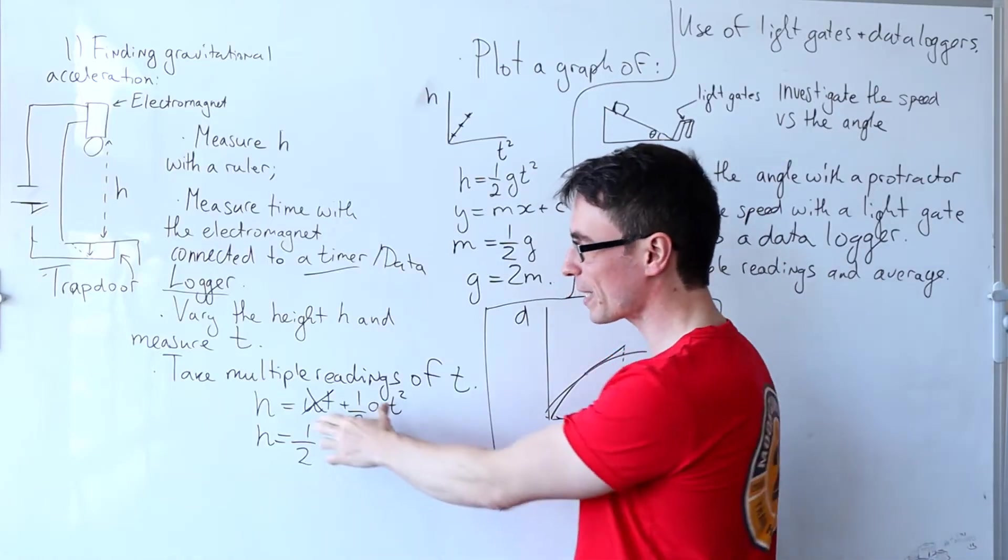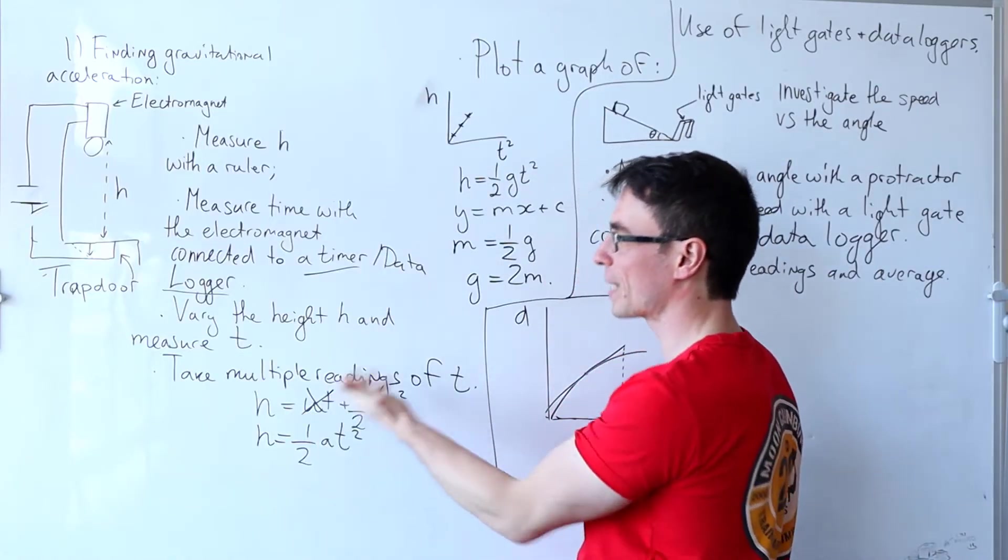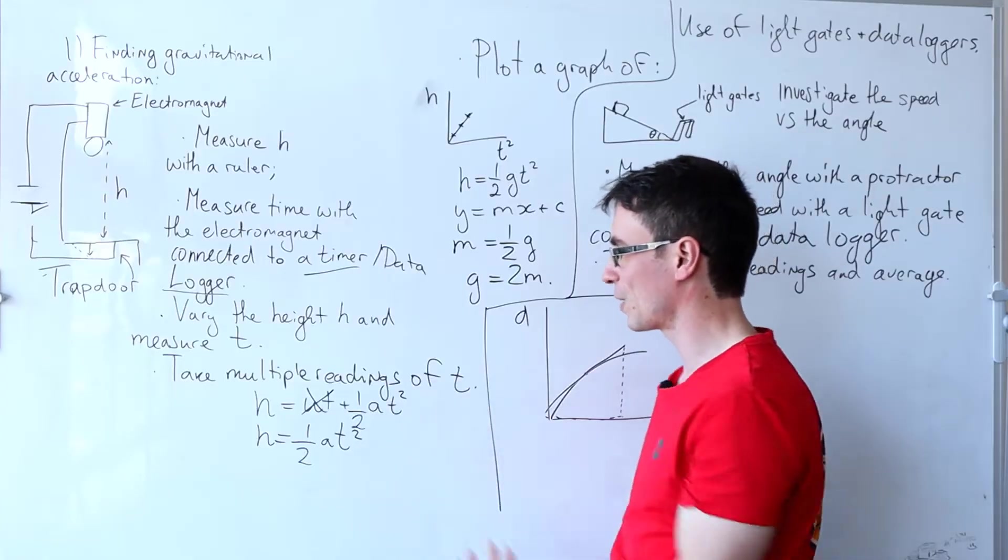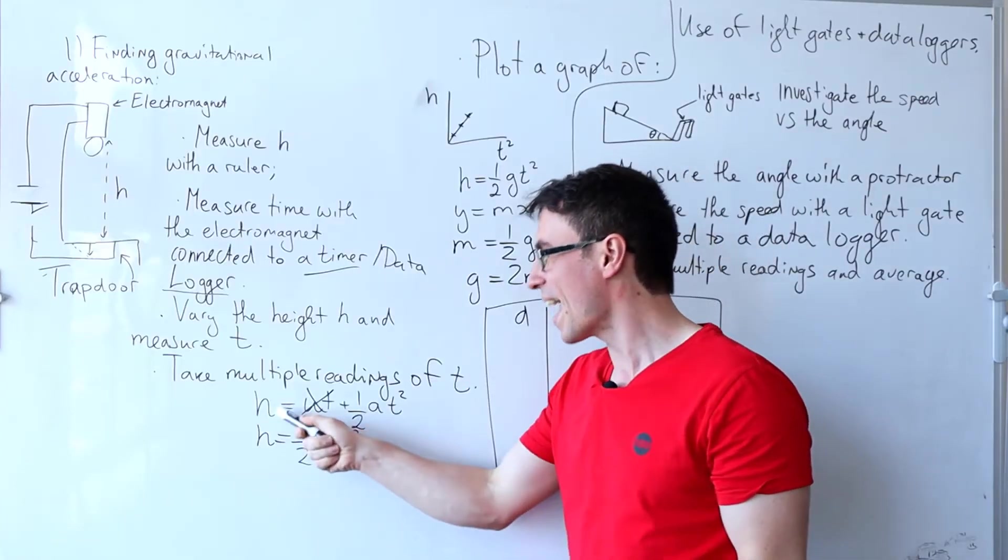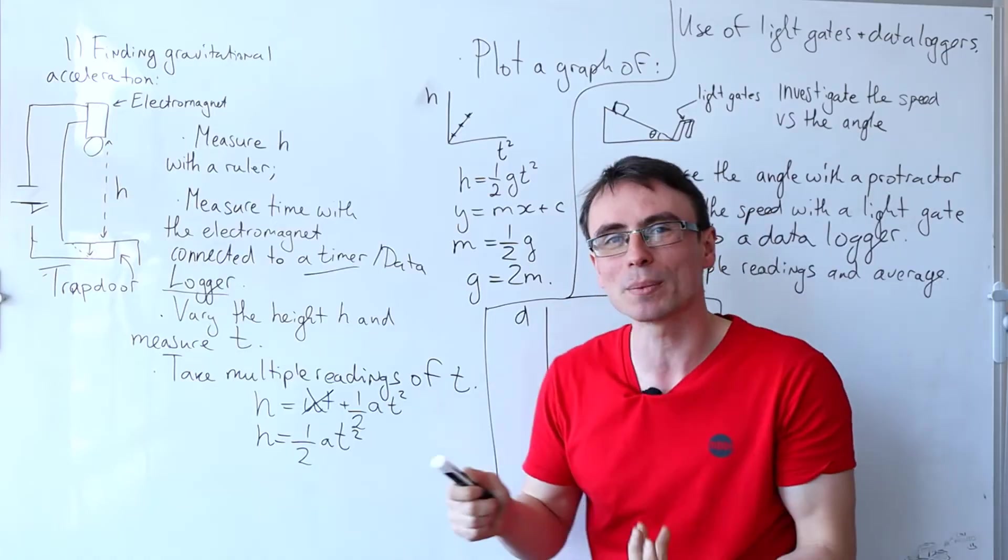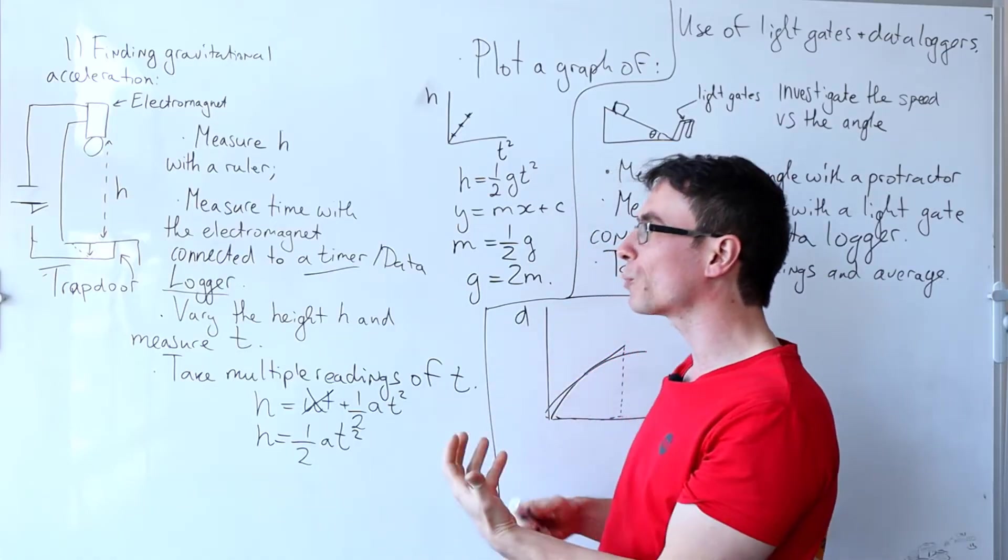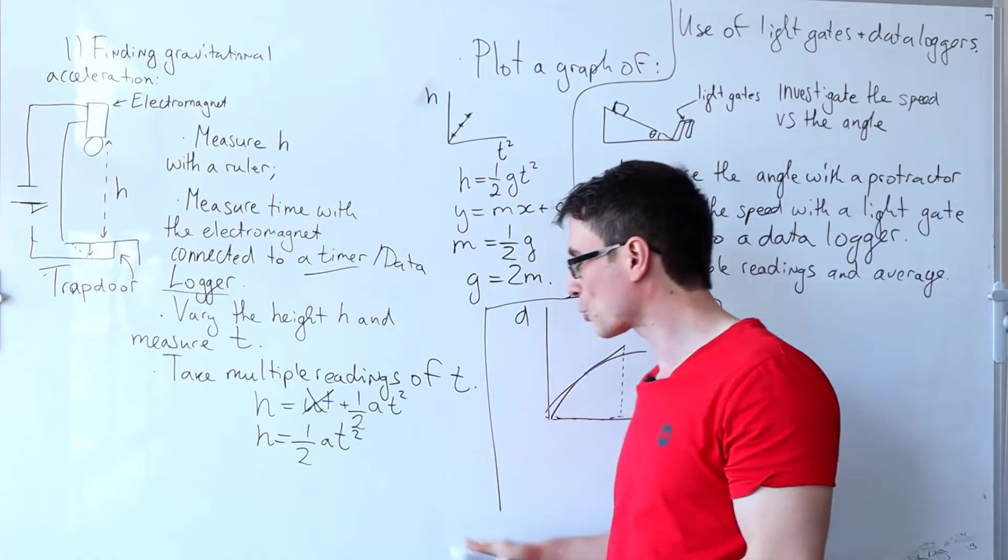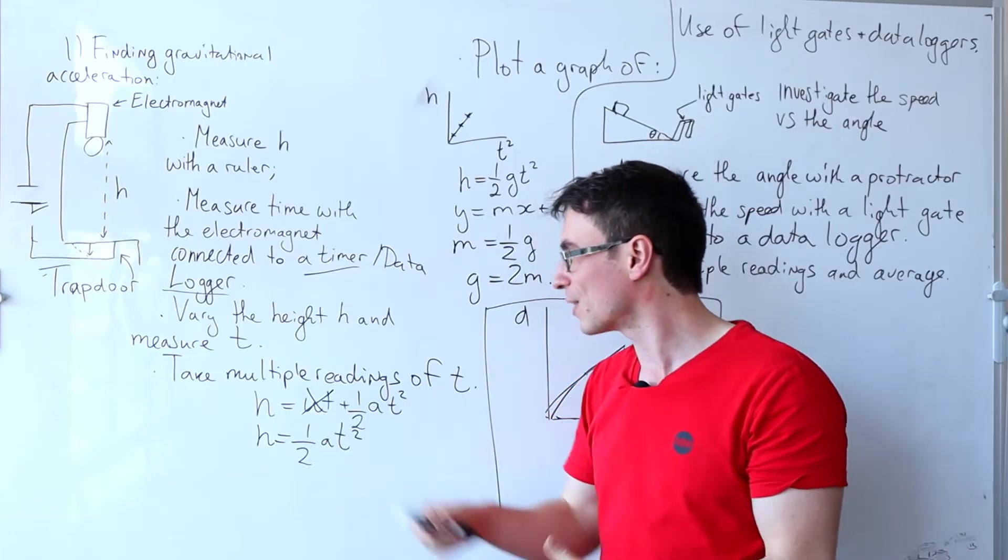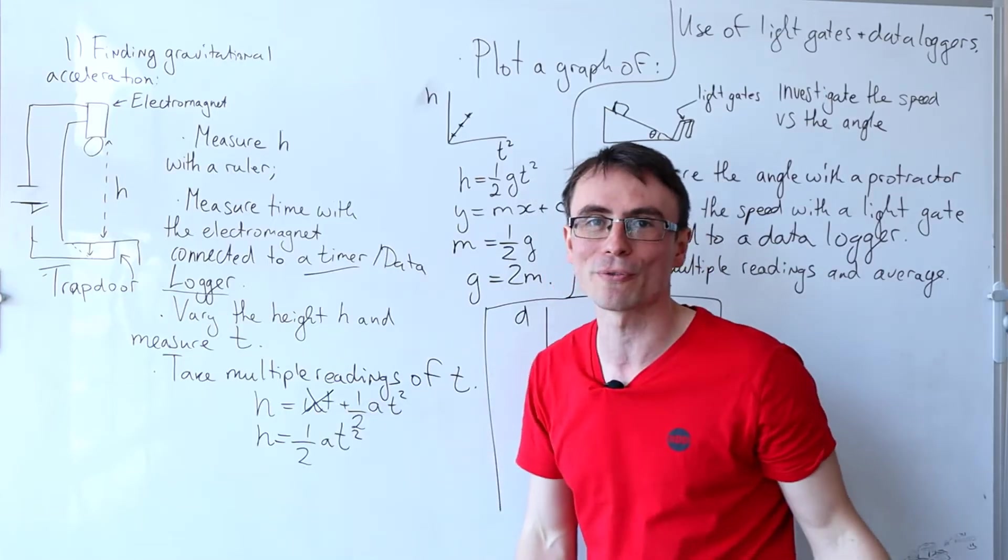Notice that in this case we can directly apply the SUVAT equation S is equal to UT plus a half AT squared. In this case S is just H and the acceleration will end up just being G. Assuming that we drop it from zero initial speed, the UT term will also vanish.